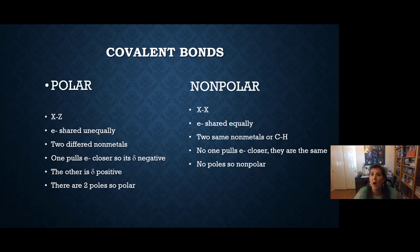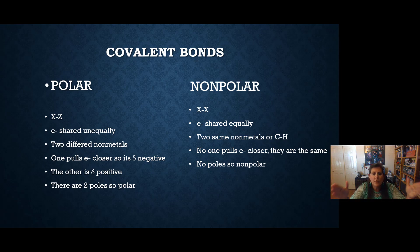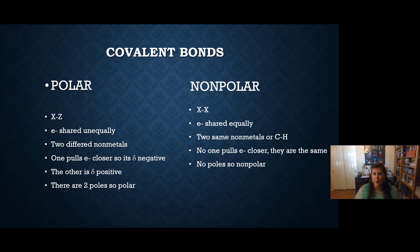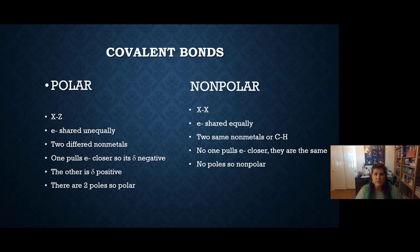Nonpolar bonds are bonded to themselves — X-X. The electrons get shared equally because it's like a tug-of-war. If you're having a tug-of-war with yourself, there's no win — it's a tie. The electrons are right in the middle of the two atoms, shared equally. If you're bonded to yourself, the tug-of-war for the electrons is a tie and there are no poles. No one's pulling the electrons closer; they're stuck in the middle. No poles — nonpolar. Back to polar bonds: someone's winning the tug-of-war. Whoever's closest to fluorine is winning and pulling those electrons closer.